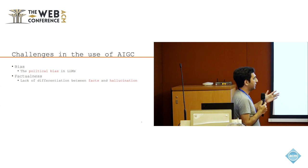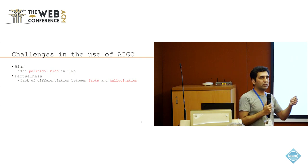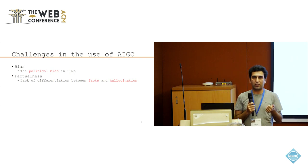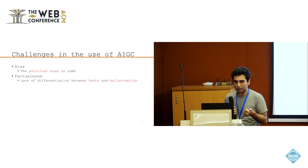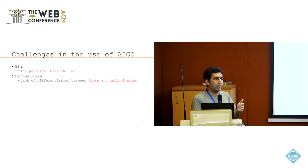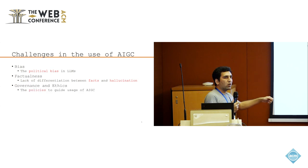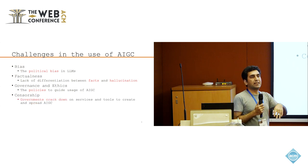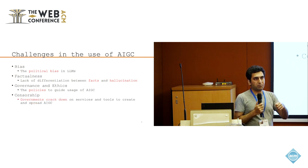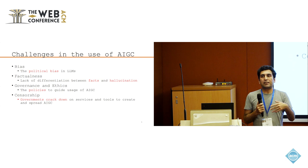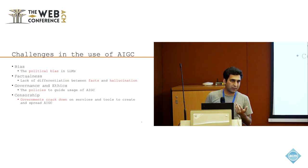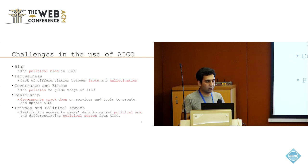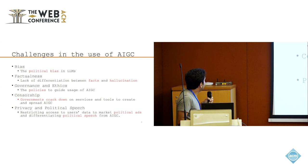The second challenge is factfulness. There is already significant research on hallucination in large language models. When these models are used to generate caller bots or similar tools, they can say things that are simply not true, and that misinformation can directly impact voters and electorates interacting with the system.